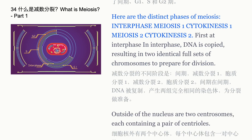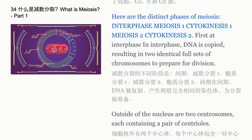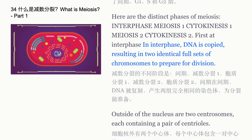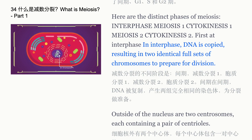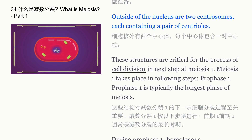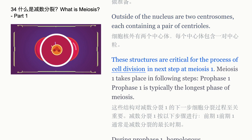Here are the distinct phases of meiosis: interphase, meiosis 1, cytokinesis 1, meiosis 2, and cytokinesis 2. First, at interphase, DNA is copied, resulting in two identical full sets of chromosomes to prepare for division. Outside of the nucleus are two centrosomes, each containing a pair of centrioles. These structures are critical for the process of cell division.